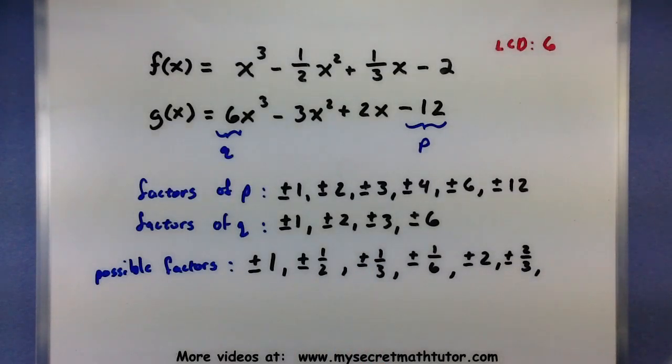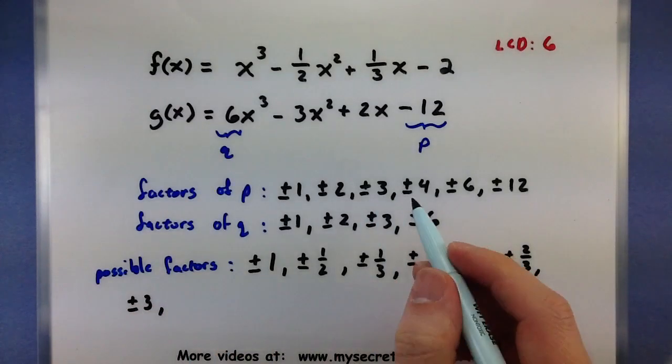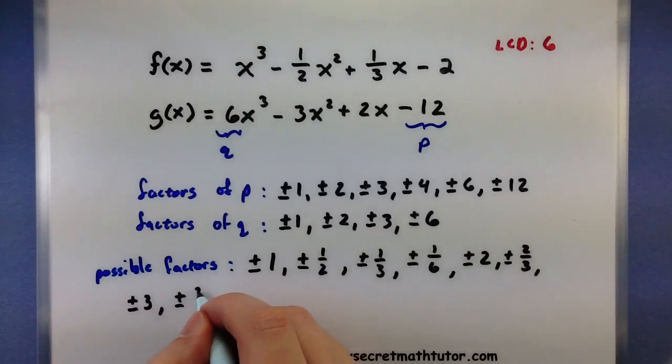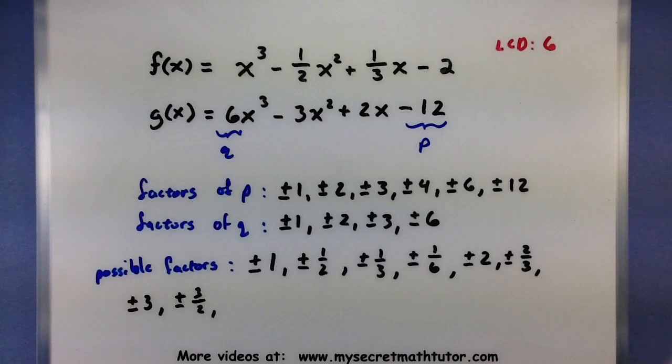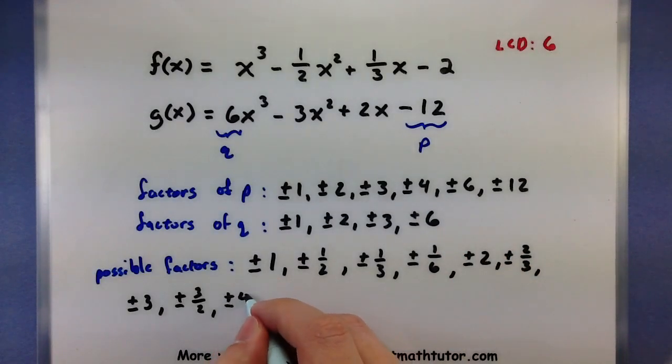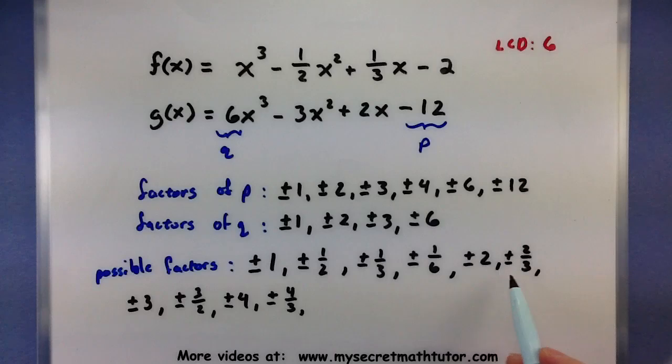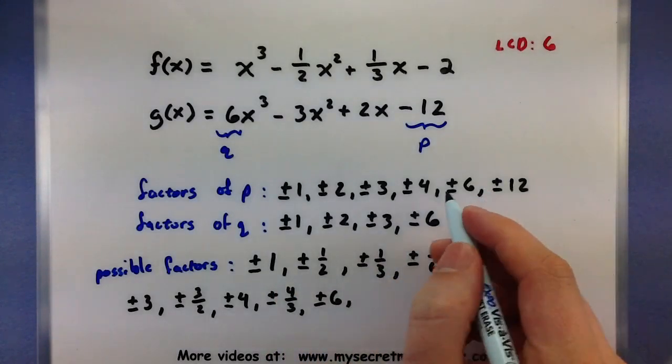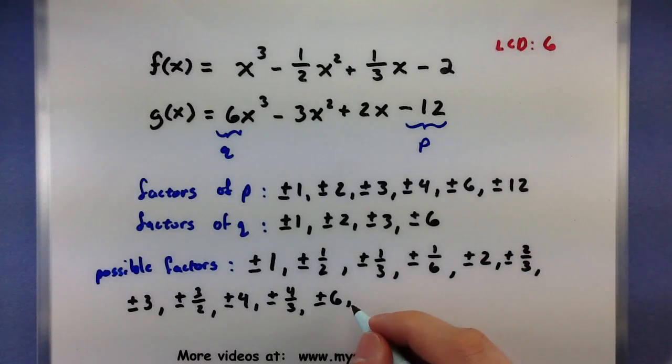So now I can go on to the 3. So 3 over 1, 3 over 2. 3 over 3 is 1 and 3 over 6 is 1 half. Both of those I have. On to the 4. 4 over 2 is 2. Then I have 4 thirds. 4 over 6 is 2 thirds, I already have it. On to the 6. 6 over 2 is 3. 6 over 3 is 2. And 6 over 6 is 1. I have those ones.